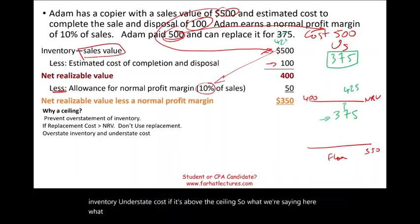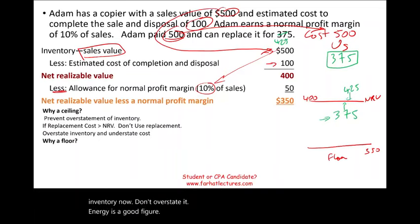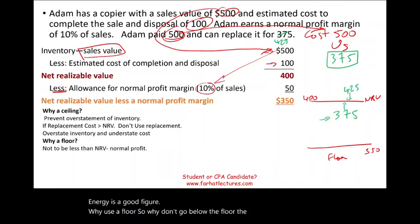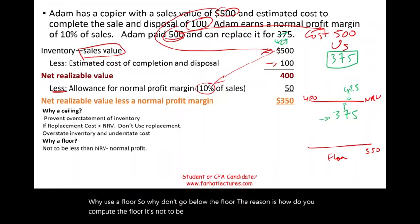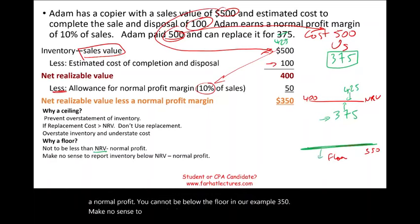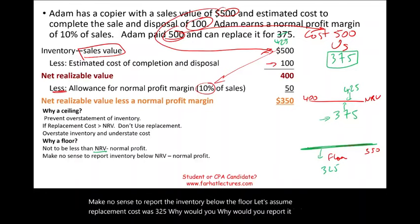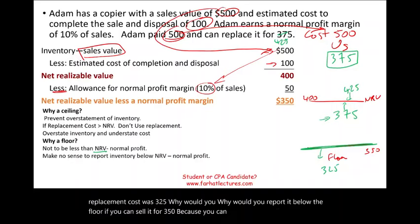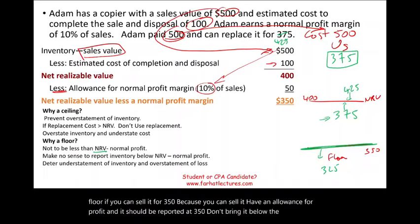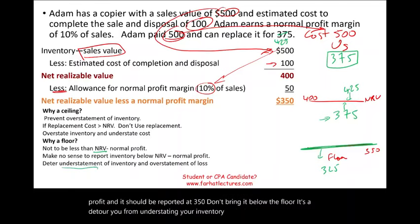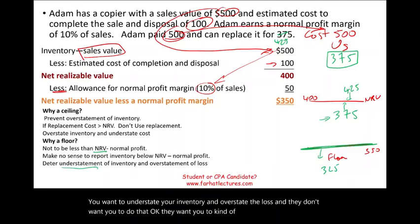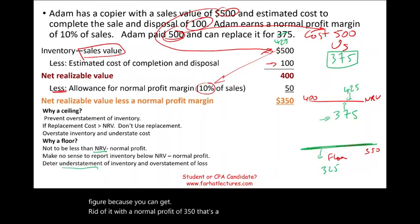Why do we use a floor? You cannot report below NRV minus normal profit. In our example, the floor is $350. It makes no sense to report inventory below the floor if you can sell it at $350 with a normal profit allowance. If replacement cost was $325, you'd still report at $350. The floor prevents understating inventory and overstating losses — which some might be tempted to do. The floor is a reasonable figure because you can realize $350 with a normal profit.